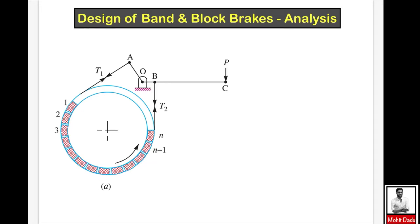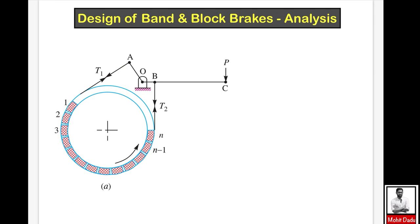In this video we'll be learning the design of band and block brakes and solving a numerical. This is a combination of band type and block type brakes. Here we have a drum which is rotating and the braking action is provided by frictional contact with the drum by blocks. These blocks are actuated by the frictional contact between the bands running over this block of frictional material. The band is attached to the lever, which is pivoted about a point, and the operating or actuating force is applied at the end.